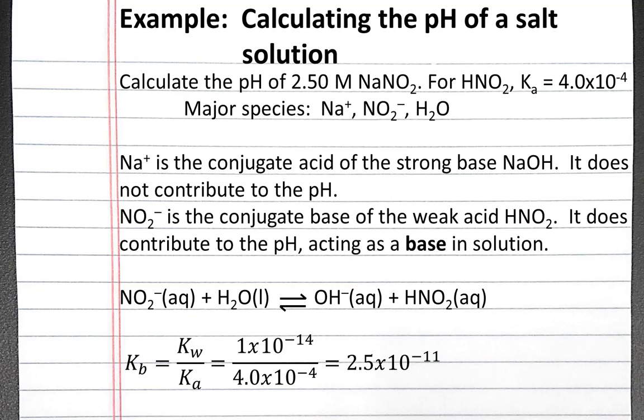Kw is 1 times 10 to the negative 14th at 25 degrees Celsius, and the Ka value is 4 times 10 to the negative 4th. So that will be 2.5 times 10 to the negative 11th.